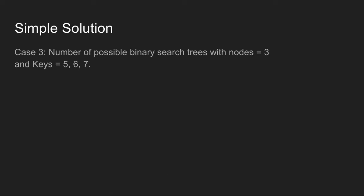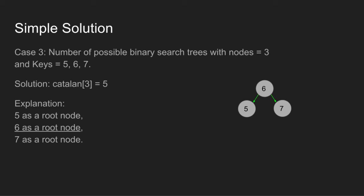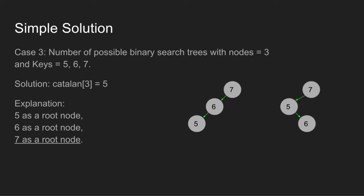Case 3 is to find number of possible binary search trees where nodes are 3 and keys are 5, 6, and 7. There are 3 choices at first view. First, if 5 is selected as a root node then either 6 or 7 can be used as next node, hence possible binary search trees are 2. Second, if 6 is selected as a root node then possible binary search tree is 1. Third, if 7 is selected as a root node then either 5 or 6 can be used as next node, hence possible binary search trees are 2. Total value becomes 5, so Catalan of 3 is 5.